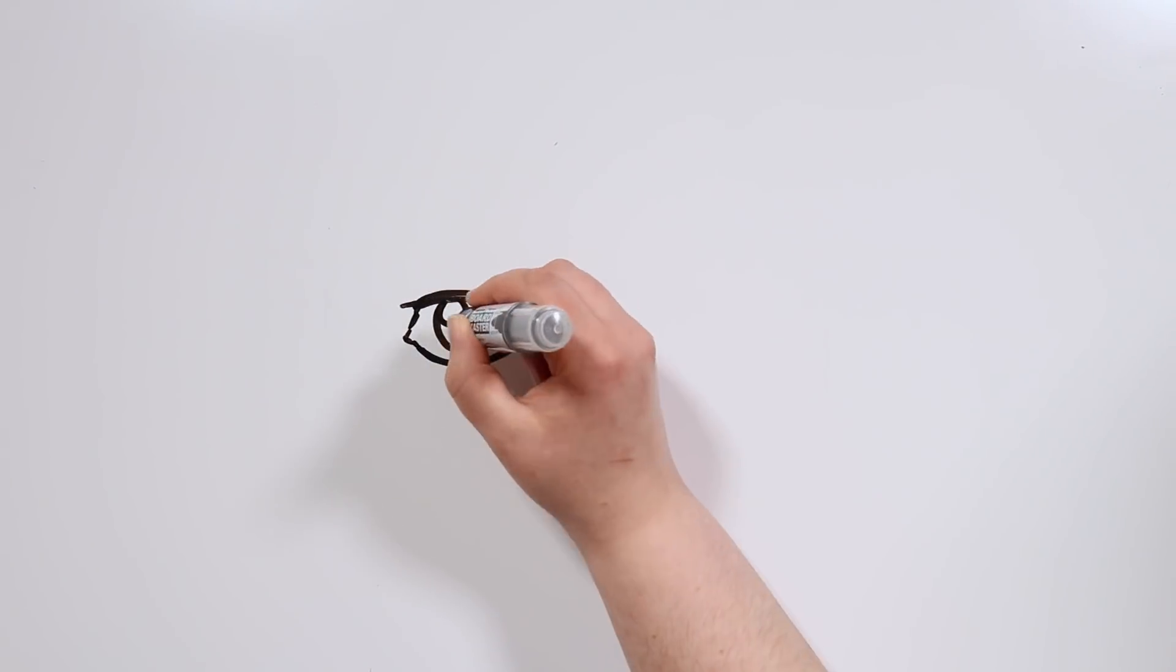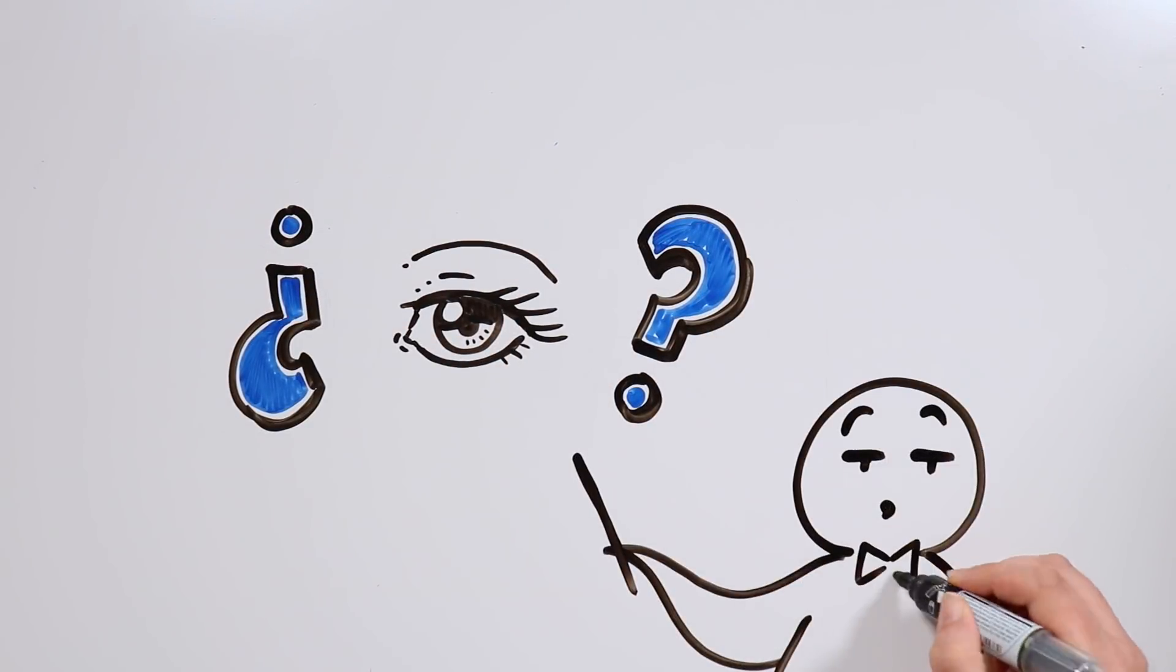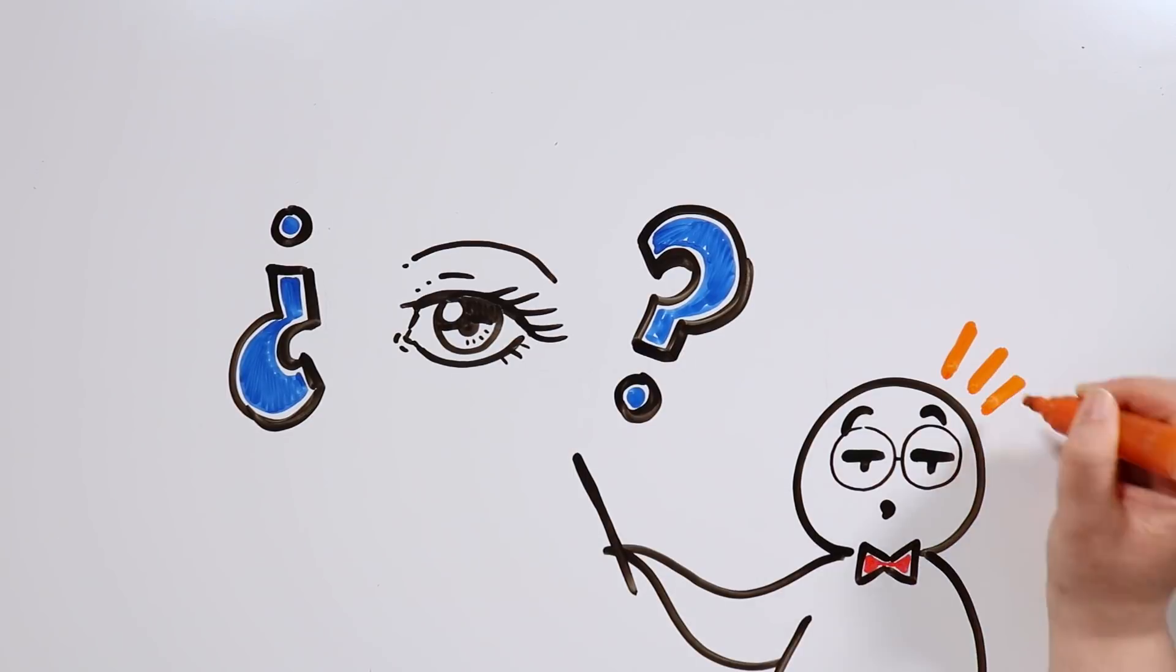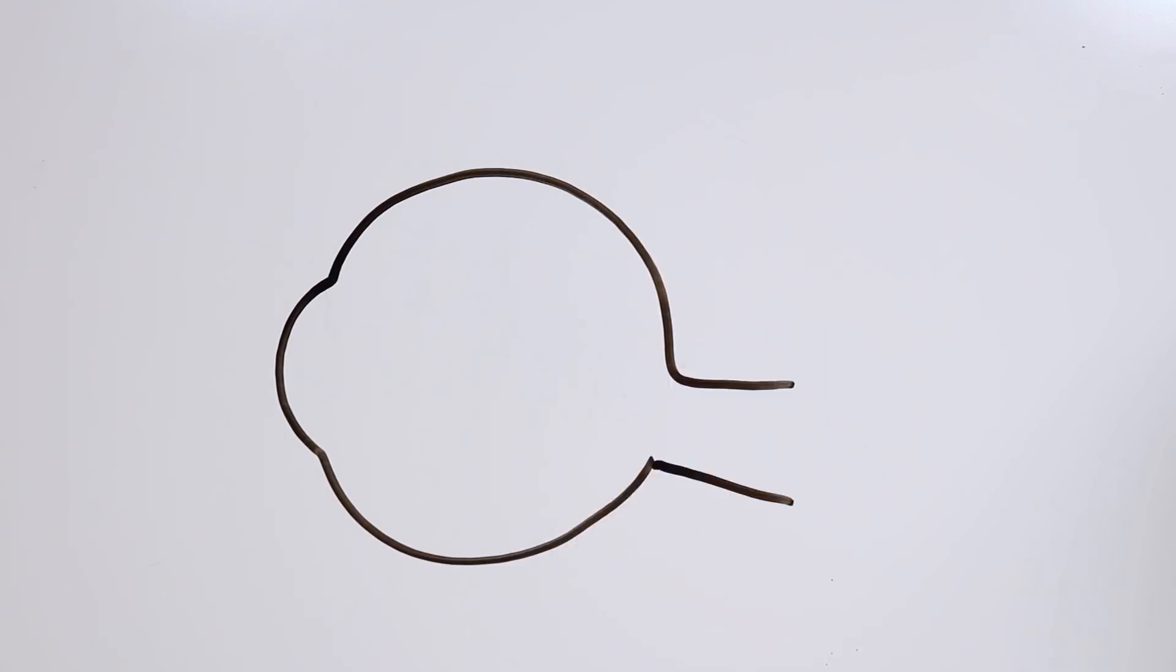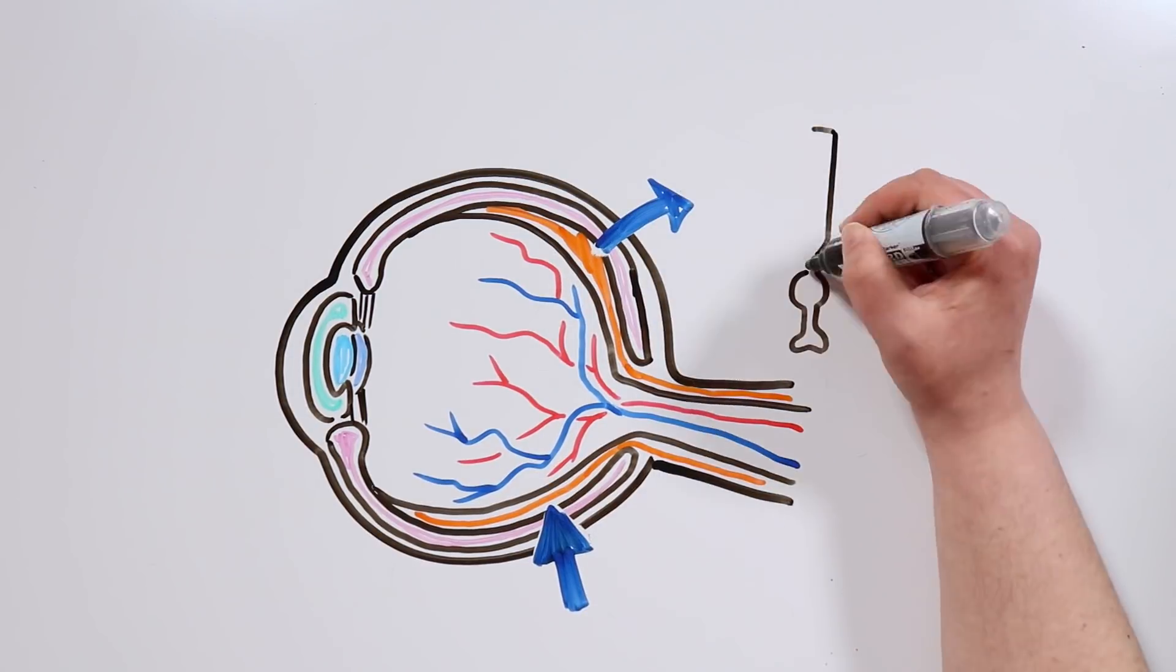And now you might be wondering, why is it that some eyes don't perceive colors correctly? Well, we'll try to explain it in a simple way. The retina, which is located in our eyes, has two kinds of cells which detect light.